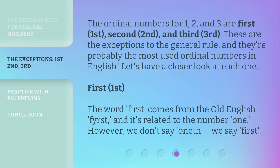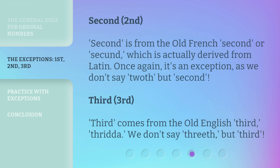First: the word 'first' comes from the Old English and is related to the number one. Second: 'second' is from the Old French 'second' or 'secant,' which is actually derived from Latin. Once again, it's an exception — we don't say 'twath,' but 'second.' Third: 'third' comes from the Old English 'thridda.' We don't say 'threeth,' but 'third.'